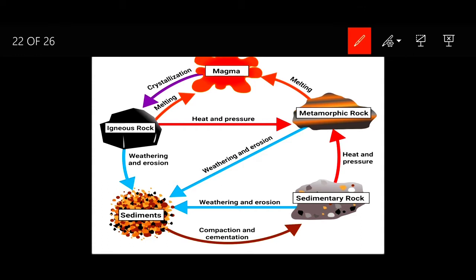Let's take igneous and sedimentary. From igneous to sedimentary, weathering and erosion happened of the igneous rock and it became sediments. The sedimentary rocks were formed by lithification, that is compaction and cementation.